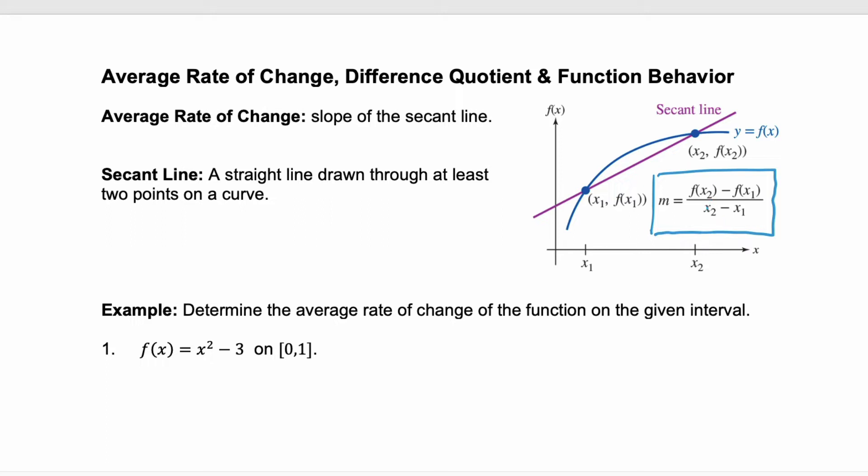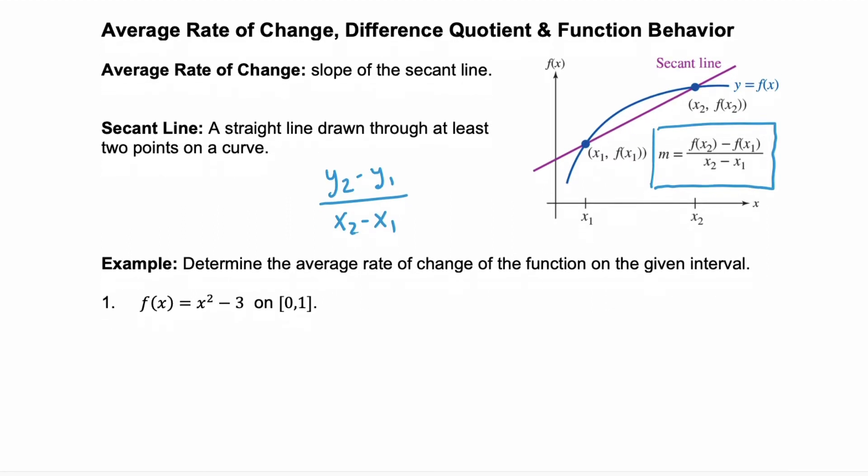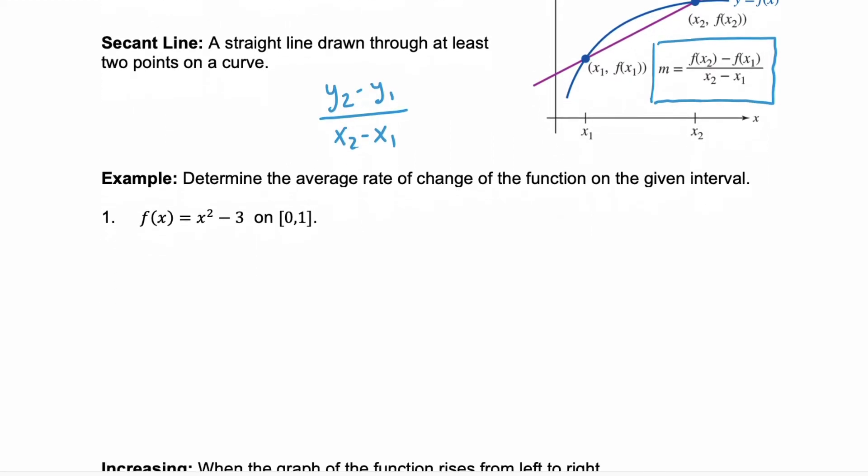This looks very similar to the slope of a straight line. Remember the slope of a straight line is y2 minus y1 over x2 minus x1. Here our y2 and y1 are replaced with f(x2) and f(x1). This really means the same thing, because when you evaluate a function f for a given value of x, it's giving you the y coordinate. So you don't have an extra formula here to remember, just remember the slope of a line.